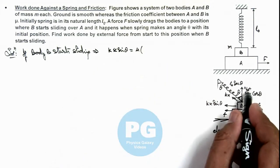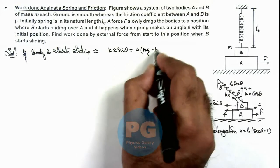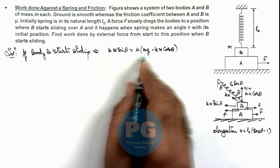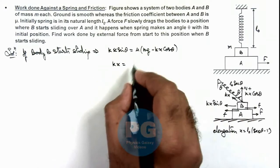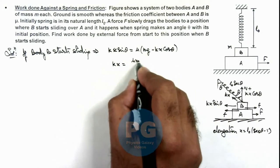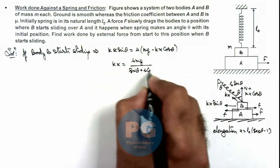And the normal reaction here can be written as mg minus kx cos θ. So this will give us the value of kx, the spring force acting on the block, which is μmg divided by sin θ plus μ cos θ.